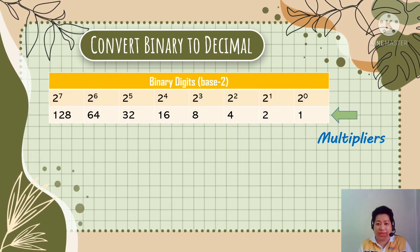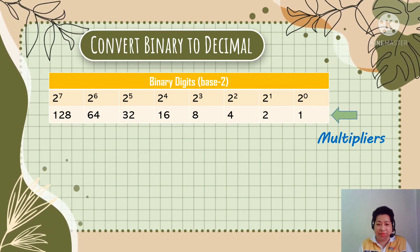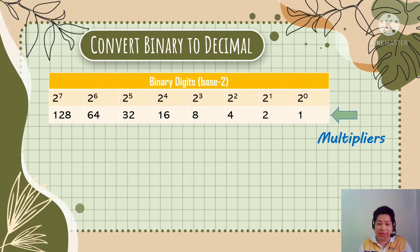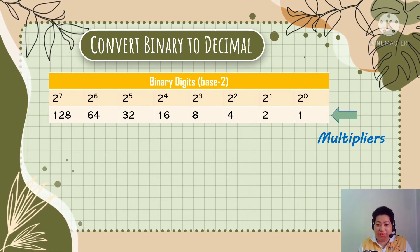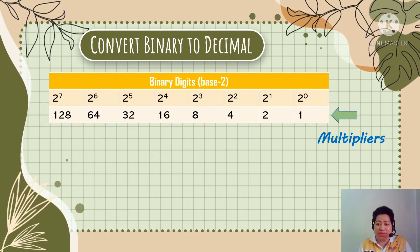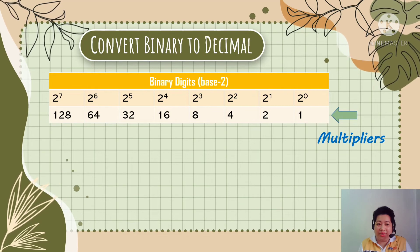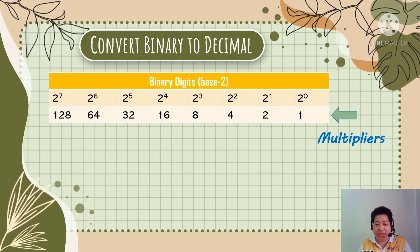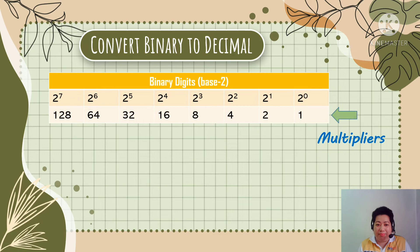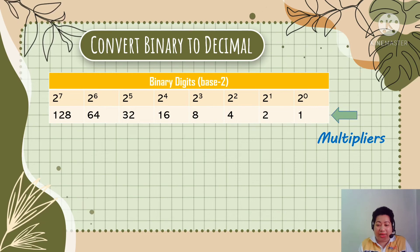In converting binary to decimal, we use multipliers. We get these multipliers by multiplying 1 by 2, then multiplying the product again by 2, and repeating. In this example, we have 8 multipliers: 1, 2, 4, 8, 16, 32, 64, and 128. If the binary number you are going to convert has more than 8 digits, just multiply 128 by 2 and continue. Remember, bi in binary means 2 — the base of binary is always 2. That is why we always use 2 in converting decimal to binary and binary to decimal.